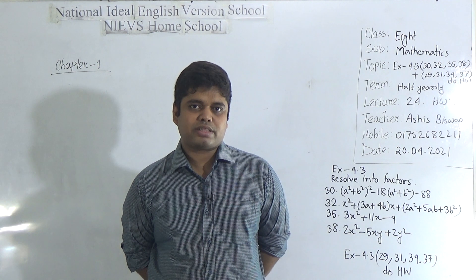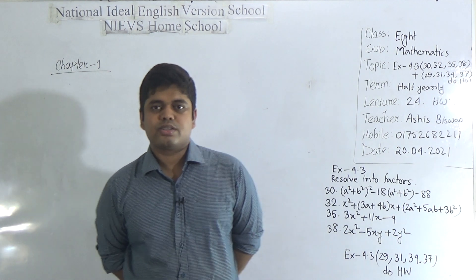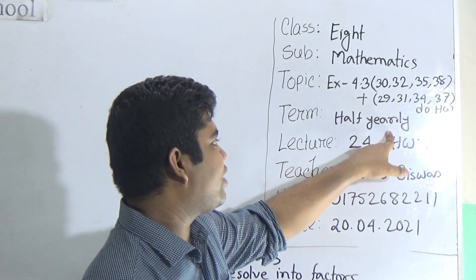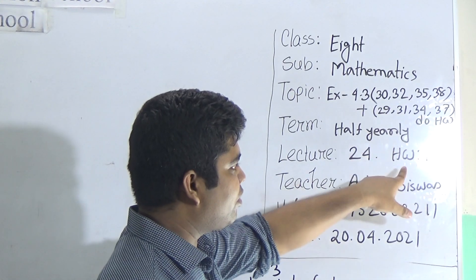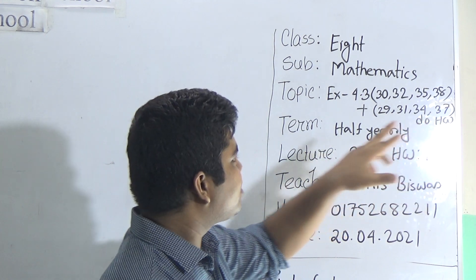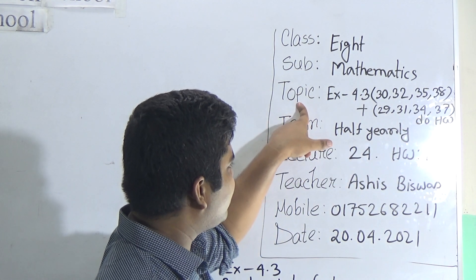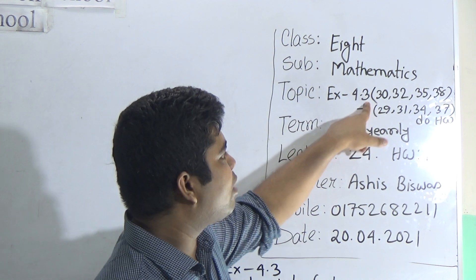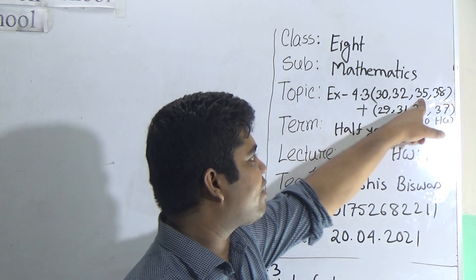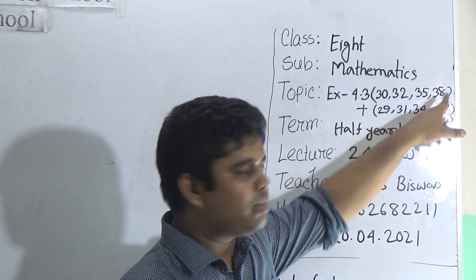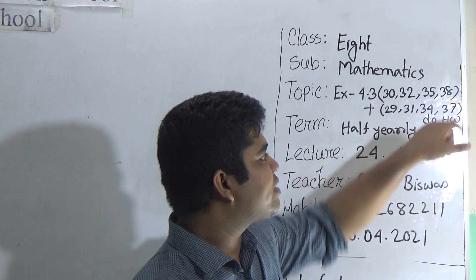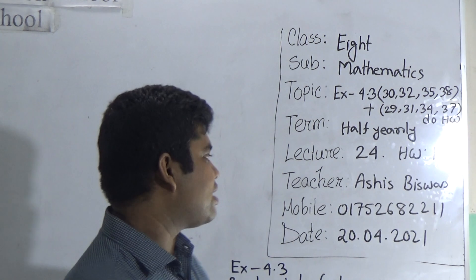Today I am going to take a math class for the students of class 8. Let us start our class. Today is our lecture number 24 of the half yearly, and today's HW number will be 16. Today's topic is exercise 4.3. From exercise 4.3, we shall solve questions 30, 32, 35, and 38 as your classwork, and questions 29, 31, 34, and 37 will be your homework.